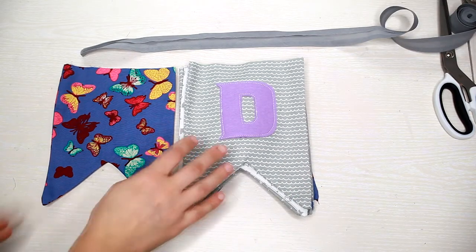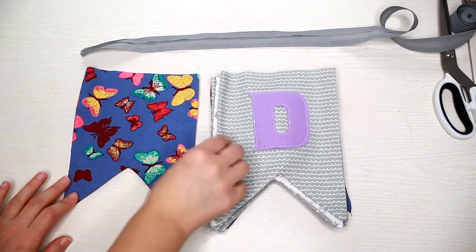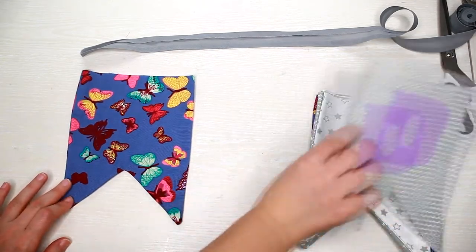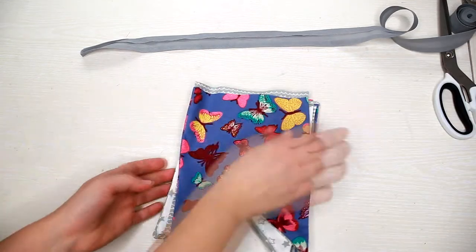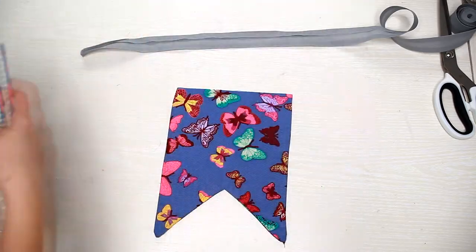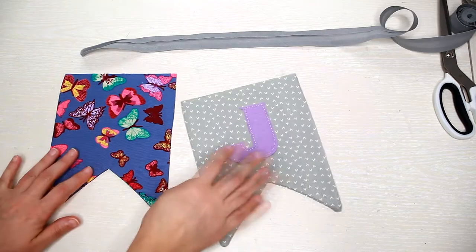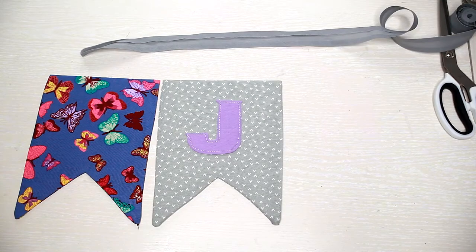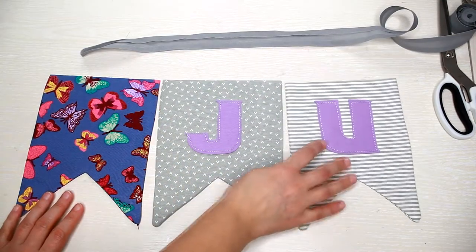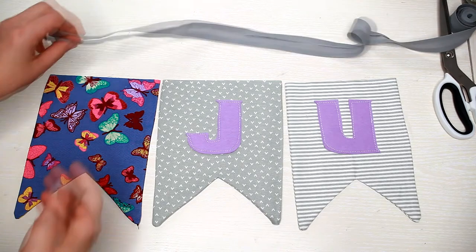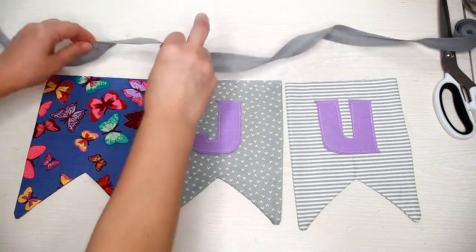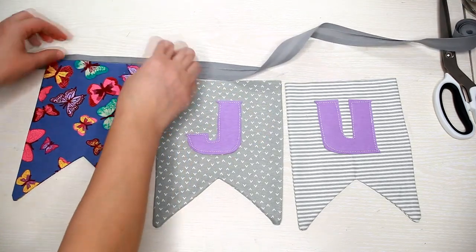The next step is adding the bias binding or the ribbon of your choice. So place the flags in the right order and pin them into the binding or ribbon.